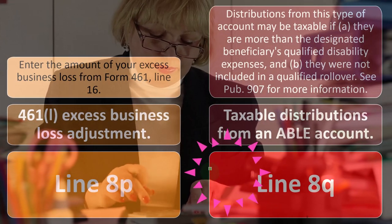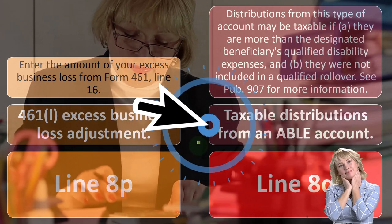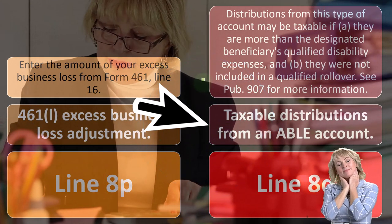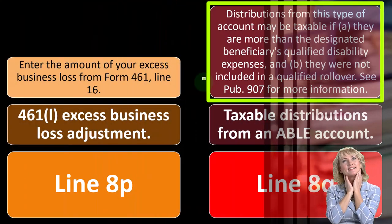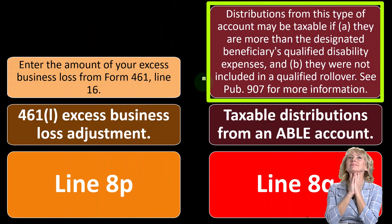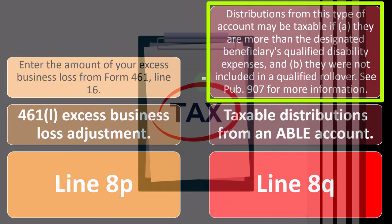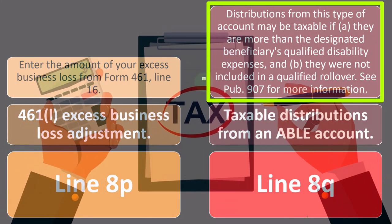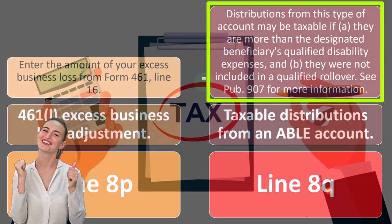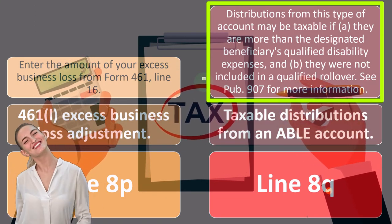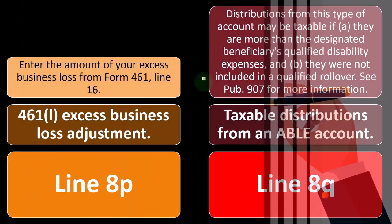Line 8Q — taxable distributions from an ABLE account. Distributions from this type of account may be taxable if: A, they are more than the designated beneficiary's qualified disability expenses, and B, they are not included in a qualified rollover. For more information on ABLE accounts, see Publication 907.